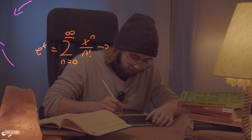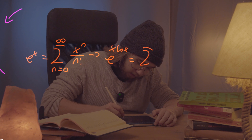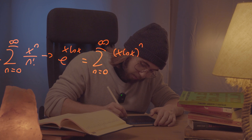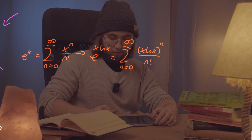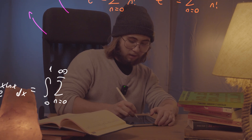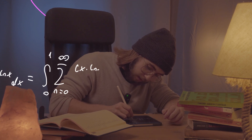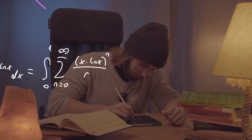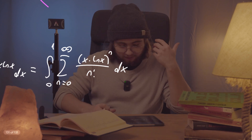We can apply this power series into our integral. We just plug x times natural log of x in for x in the power series, so e to the power of x ln x equals the sum as n goes from 0 to infinity of x natural log of x, everything to the power of n, divided by n factorial.